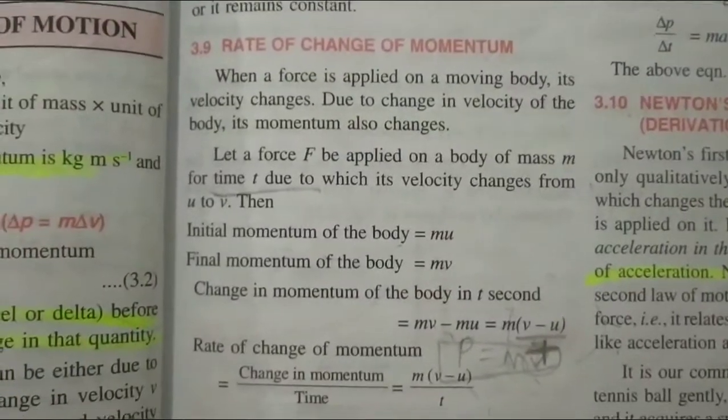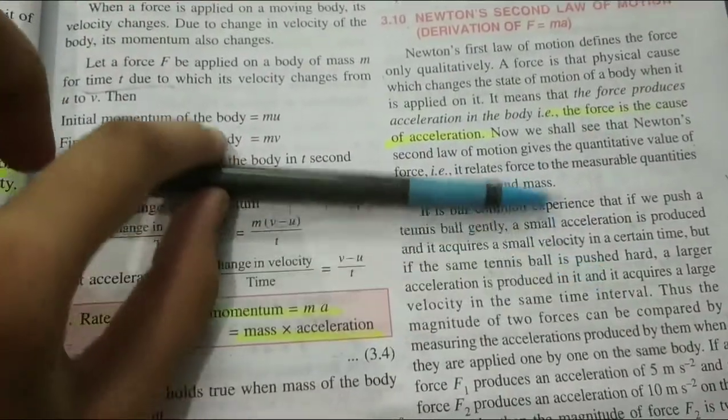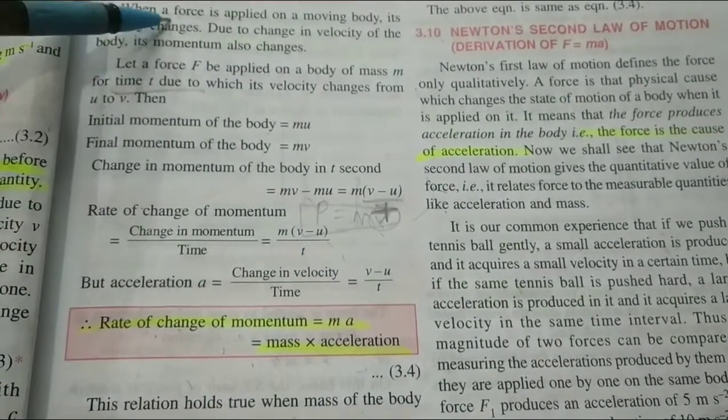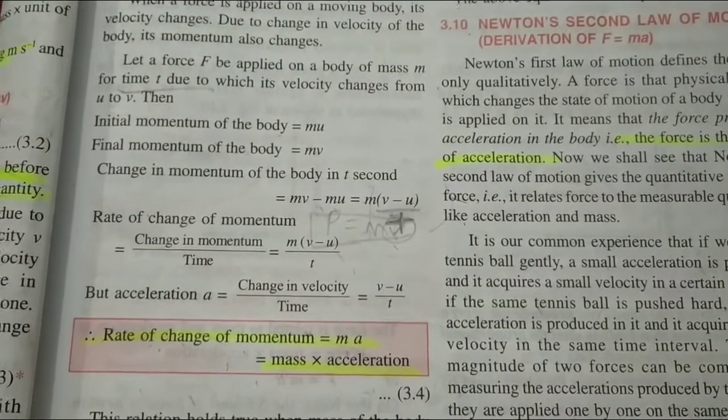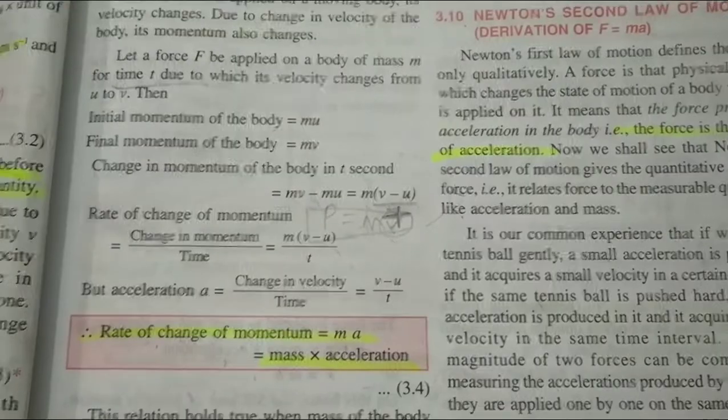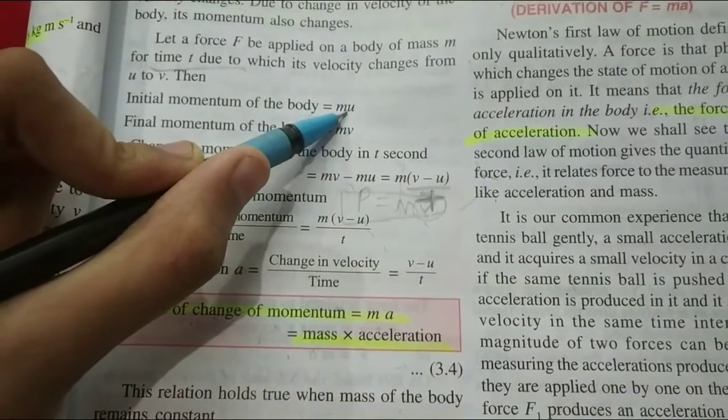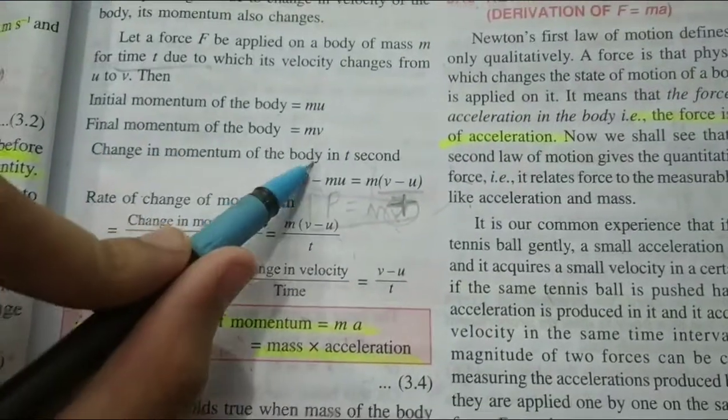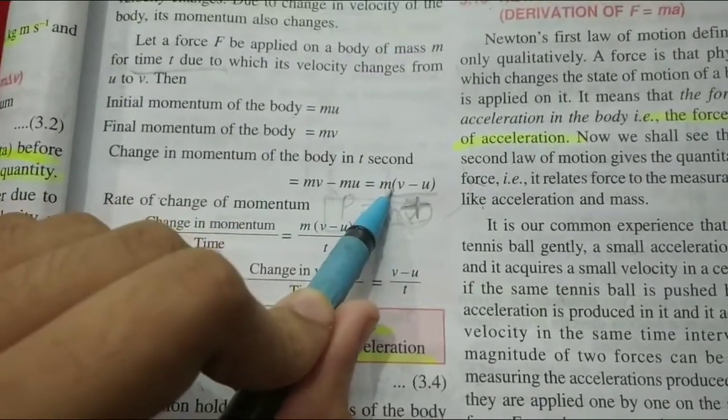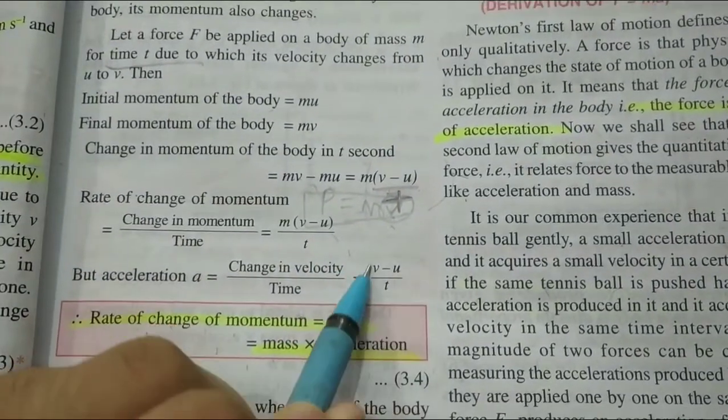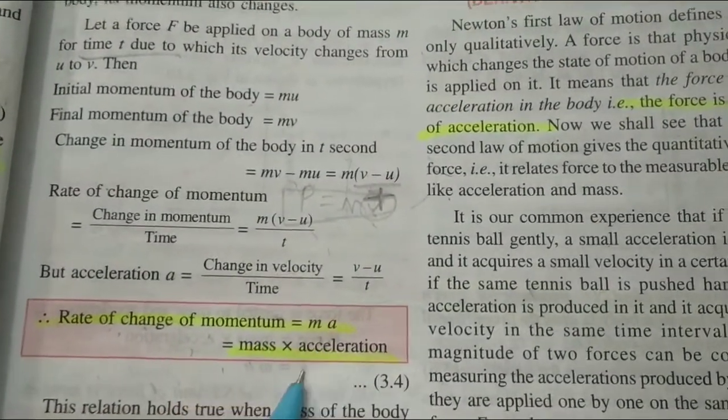And this means the rate of change of momentum. For example, this is a pen. I have given it a little force, it will change in velocity, it will move. And the change in velocity means the momentum will change. As you can see, delta p is equal to delta mv. Initial momentum is mu, u is for initial velocity. Final momentum is mv. Both changes in t second. That will minus, m is common, v minus u upon t. And this is the formula of acceleration. That's why the rate of change of momentum is mass into acceleration.